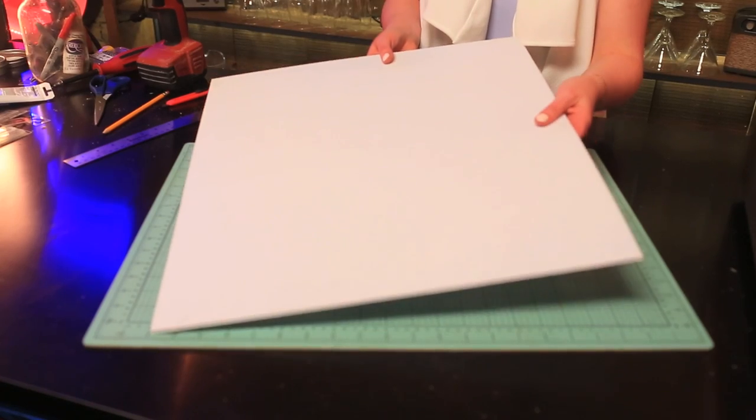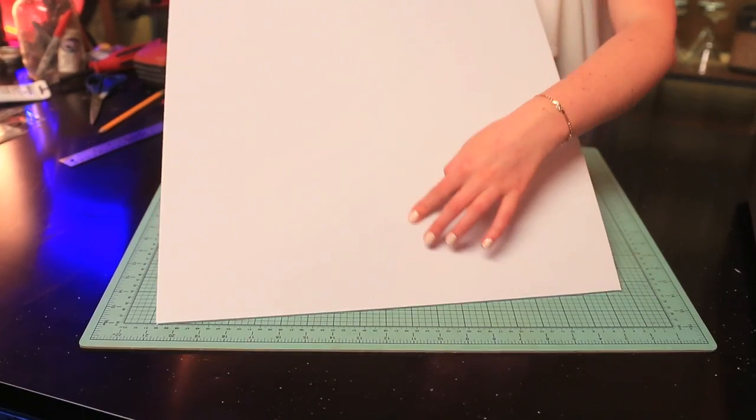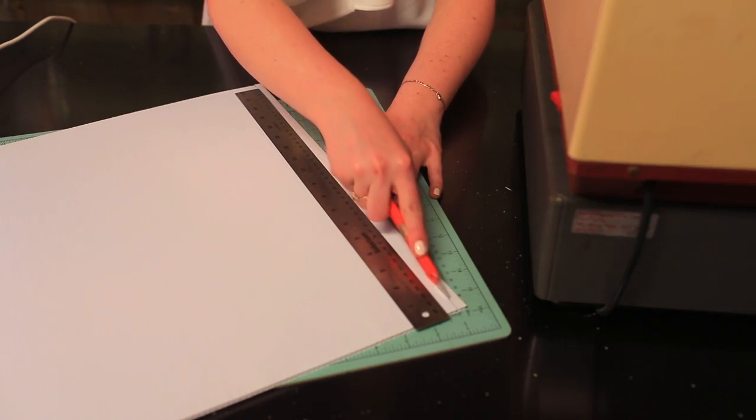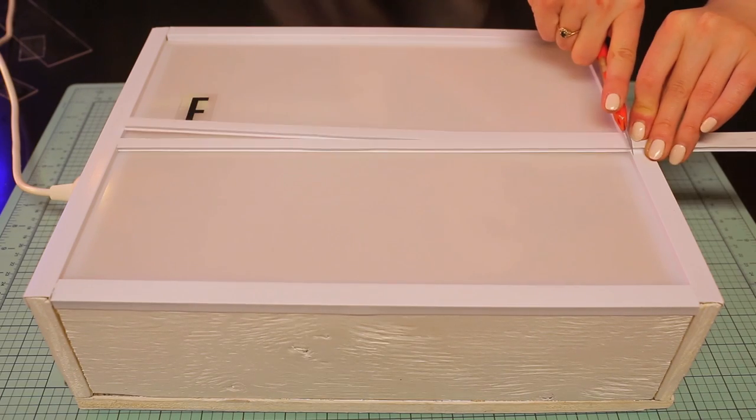Now we need to make the ledges for our letters. For this we're using this white corrugated plastic sheet we got from the hardware store. If you cut it on either side of the corrugated holes, it creates a line strip of plastic with ridges on either side. Cut out four strips as wide as your plexiglass and lay them out evenly on your light box.